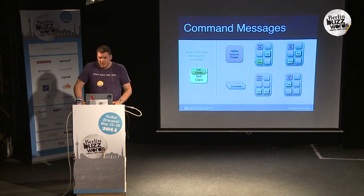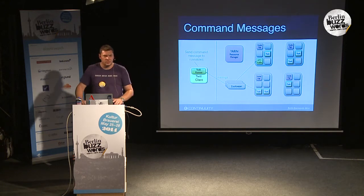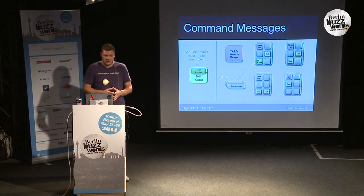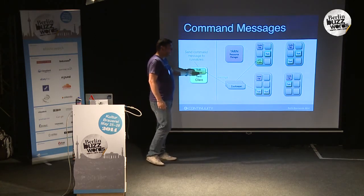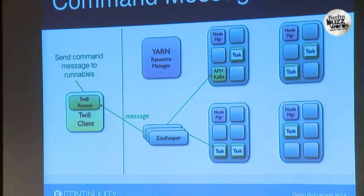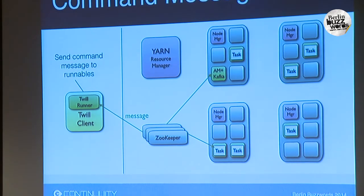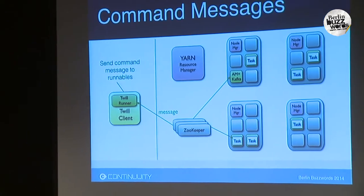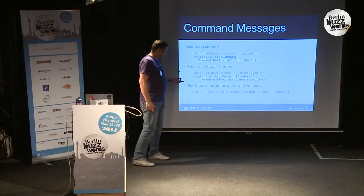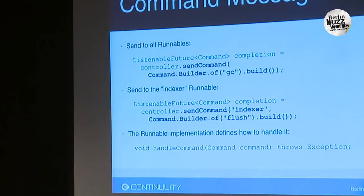Command messages are another common pattern. Say I'm running 10 Lucene indexers and I want them all to flush at the same time. In Twill, you can send commands to every runnable. This happens through ZooKeeper — the twill client uses the twill runner API, which puts the message into ZooKeeper. All tasks, wrapped in a twill wrapper, are watching those ZooKeeper nodes, and when a command appears, they all execute a callback. In the runnable, you simply implement a method to handle a command, which is just a simple string.